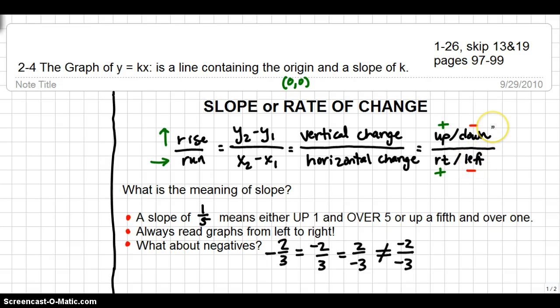Keep in mind that there is a difference between negative 2 thirds, negative 2 over 3, negative 3 under 2, and negative 2 over negative 3. Only three of those four are equal to each other. Only when there's a single negative, either on the top or the bottom or in front of the fraction, do you get a negative slope. A negative slope simply means it will go down from left to right. Always make sure you read your graphs from left to right so that we're all saying which way the slope is going in the correct format.